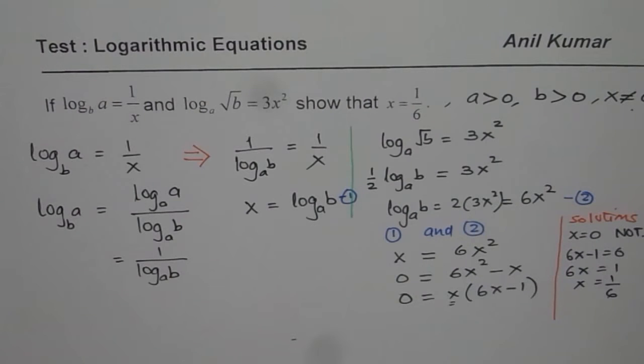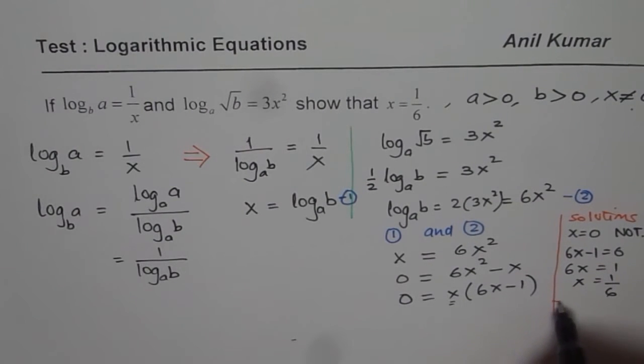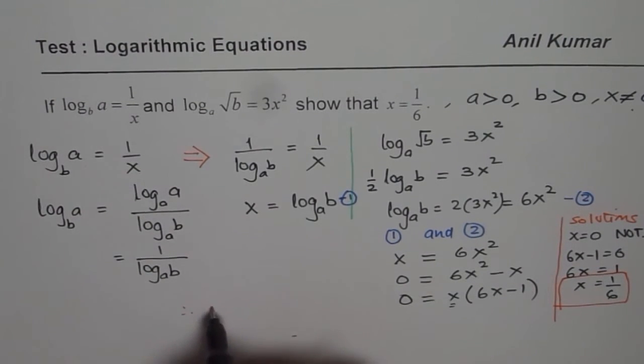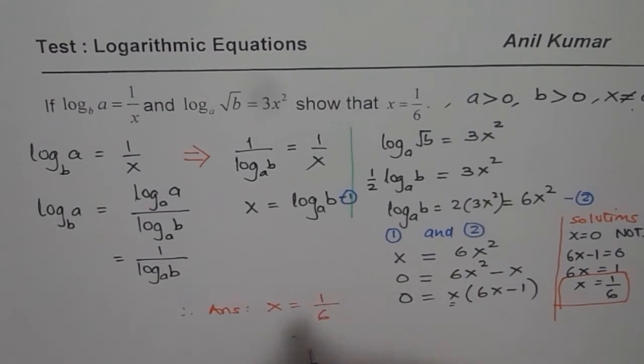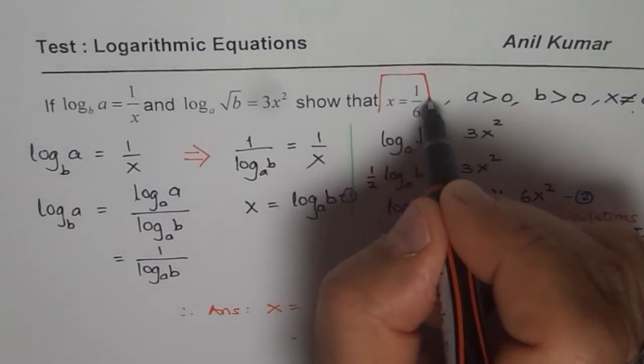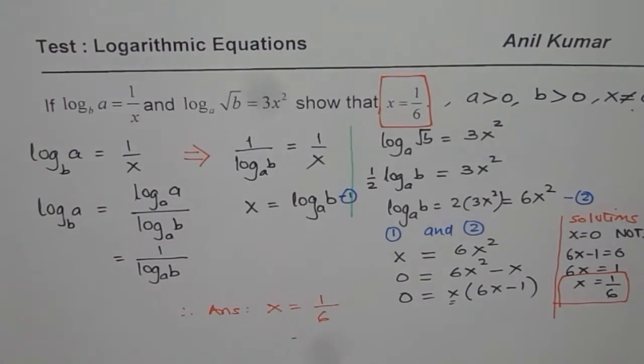So we get our solution that is x equals 1 over 6. And now we can say therefore, solution is x equals 1 over 6. And that is what we wanted to show. So that is how you can show it.